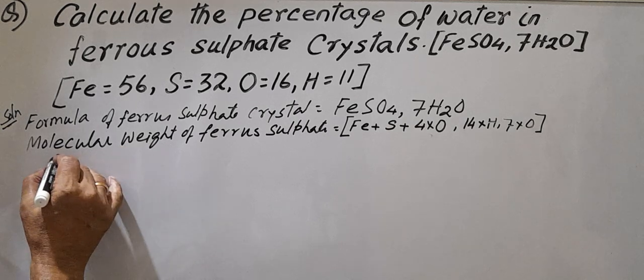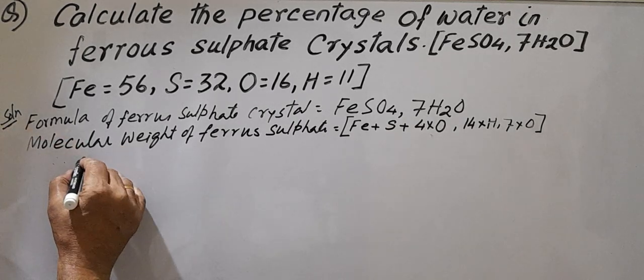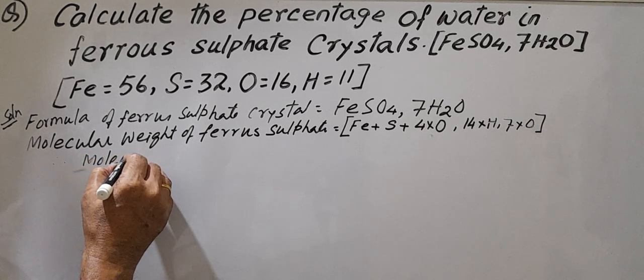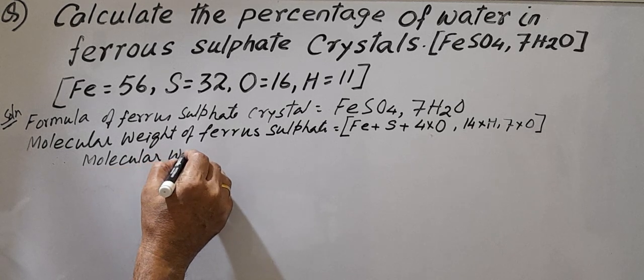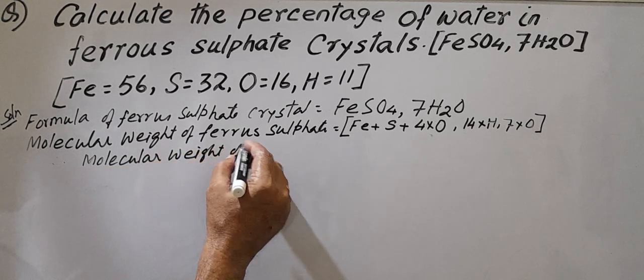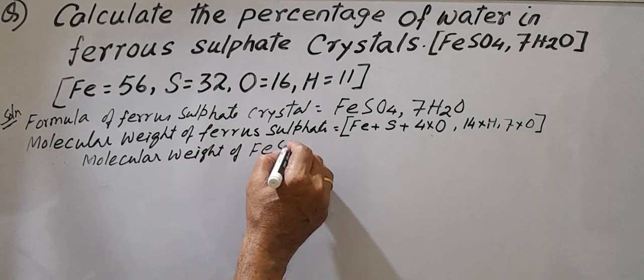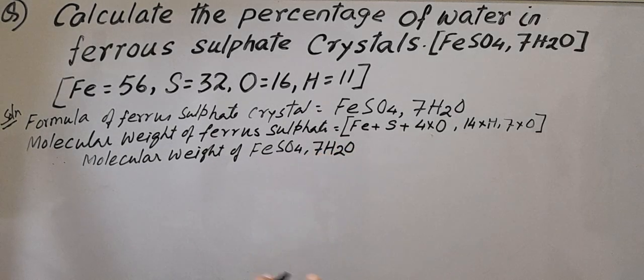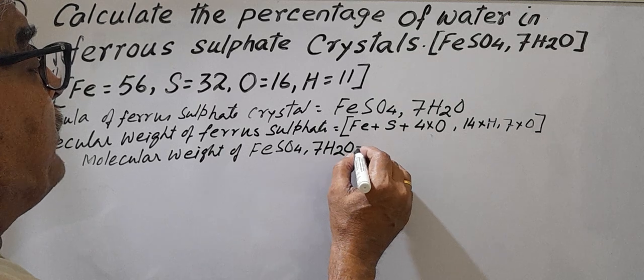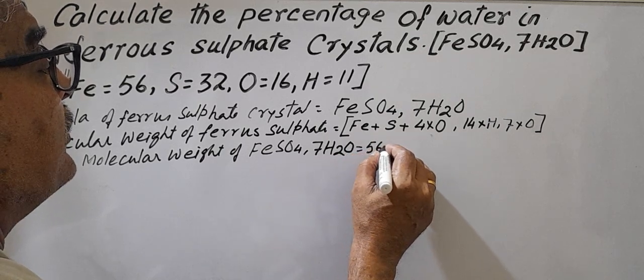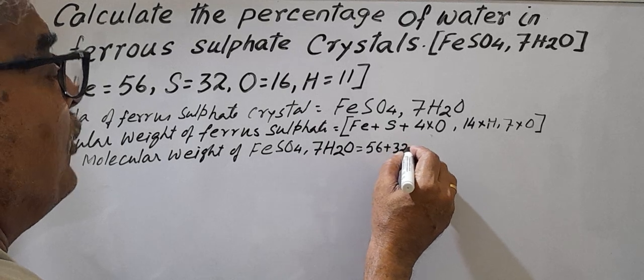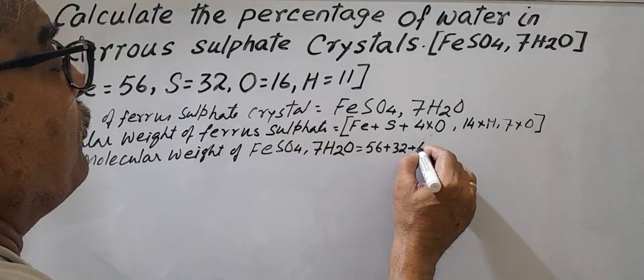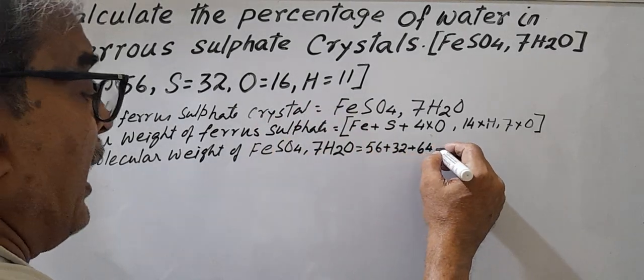Therefore molecular weight of ferrous sulfate, of FeSO4, that is 56 plus 32 plus 4 into 64 - O is 16, so 64.